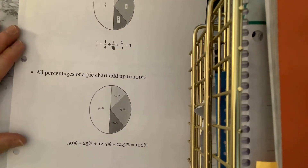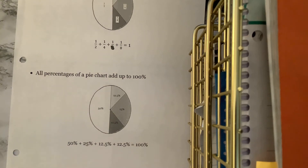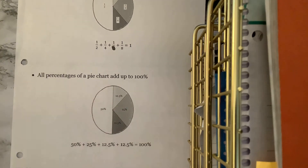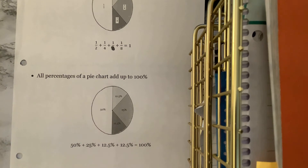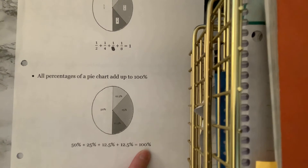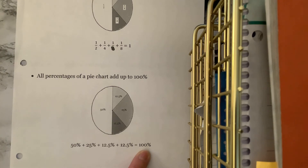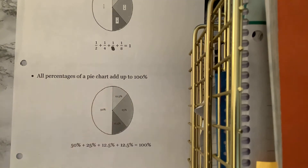Similarly, all percentages of a pie chart add up to 100%. All of a pie — what percent of a pie is all of the pie? 100% of it. We see 50%, 25%, and two 12.5% sections. If we add those all together it adds up to 100%. So if we know some percentages but not all of them, we should be able to figure out the rest, remembering that all percentages of a pie chart add up to 100%.